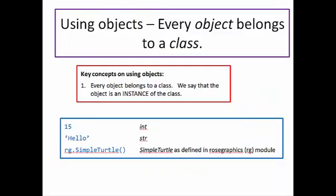The first of the three key ideas is that every object belongs to a class — that is, every object has a type. For example, the object 15 belongs to the int or integer class, the object hello belongs to the string class, and the object rg.simpleTurtle belongs to the simpleTurtle class as defined in the Rose Graphics module.